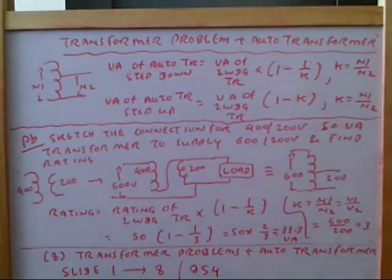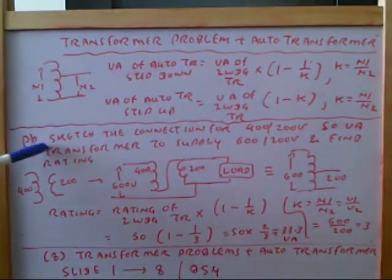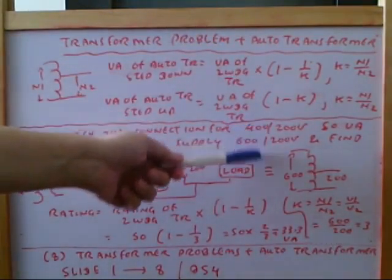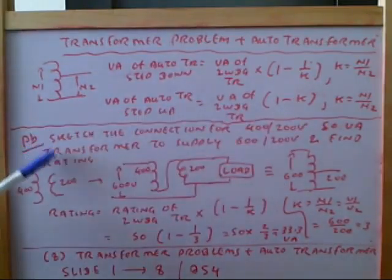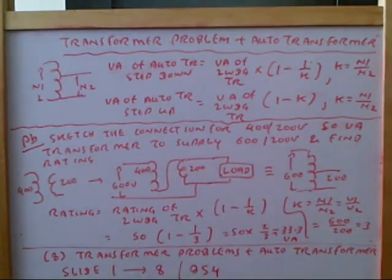With this problem, we saw it sketch the connection for 400/200 volt 50 VA transformer to supply the 600/200 volt light and find the rating. So originally it's the two winding transformer, right you are going to need 400 volt rating, you are going to need 200 volt rating.